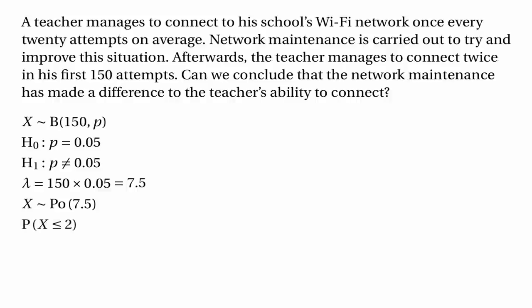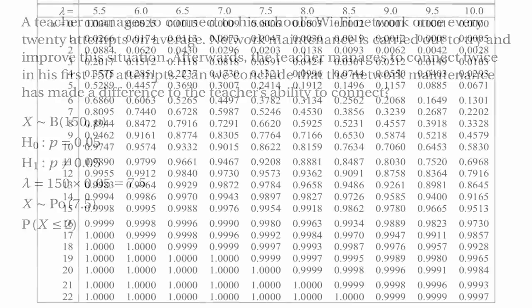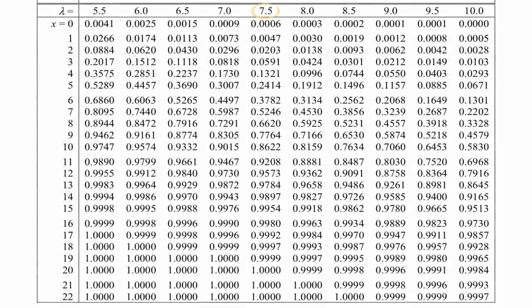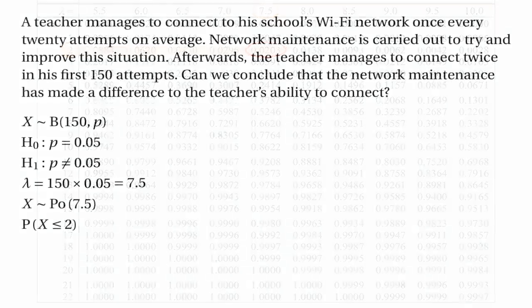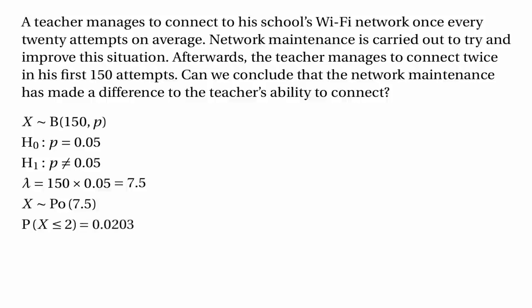The probability we need to calculate is the probability that x is less than or equal to 2. We need the probability that the number of times the teacher connects is a number like 2 — and like 2 here means less than 2, because no successes and 1 success are further away from 7.5 than 2 is. Looking at the tables where lambda equals 7.5 and x equals 2, we get the probability 0.0203.